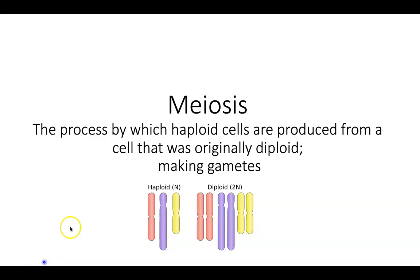This lecture will cover meiosis as well as what happens when meiosis is performed incorrectly or when there are chromosome abnormalities. So what is meiosis? Number one, it is not mitosis — it looks very similar, but it's different. It is a process in which haploid cells are produced from cells that are diploid. Once this occurs, we make special cells called gametes.